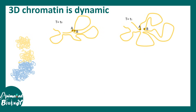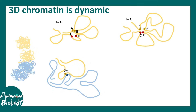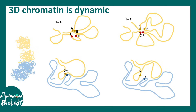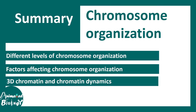3D chromatin is a highly dynamic entity. At time t0, particular genomic points A and B may be close in space, but at time t1 these two regions might move far apart. This can also happen at an inter-chromosomal level — there can be new interactions formed or resolution of old interactions. For instance, interacting points X and Y between two chromosomes may resolve at t1 and new loops may form.